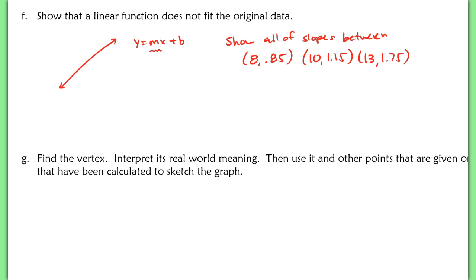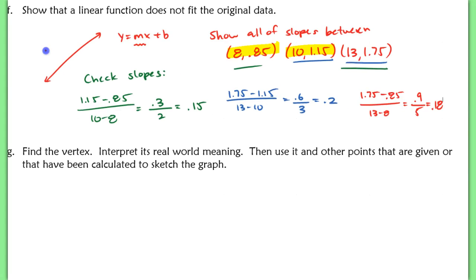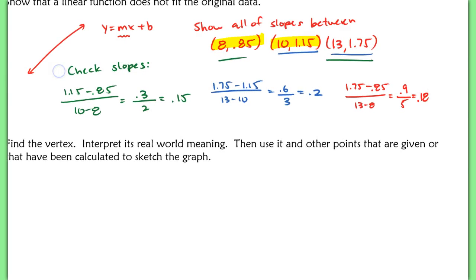So what we're going to do is show the slopes between these two points here first. Then we'll find the slope between these two points. And then finally, the slope between these two points. And we're going to show that they are not the same slope, that they are not constant between one another. So as we can clearly see, a linear function does not fit this data because we do not have the same slope between all of the points. Because the slopes are not the same, a linear function does not fit the data.